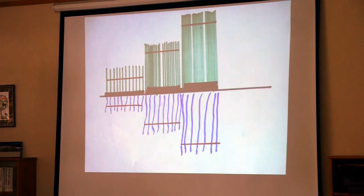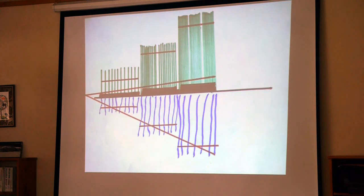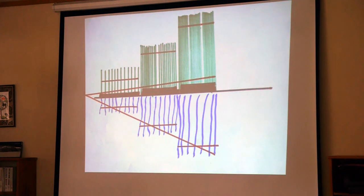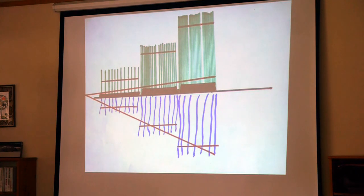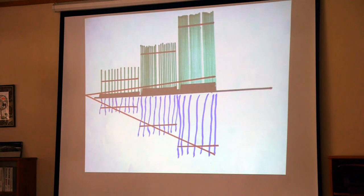The earthworms are working. We've got carbon building up on the surface and carbon building up below the surface. All of a sudden we have no droughts anymore, even in Africa, because that stores moisture. The plants grow and we increase our stocking rate by at least double - probably four times. I've seen six times, and I don't know where the end is.